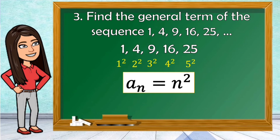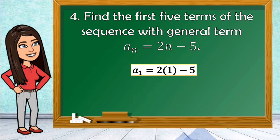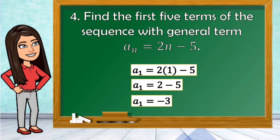Now we are done with analyzing the patterns. For number 4, find the first 5 terms of the sequence with general term a sub n is equal to 2n minus 5. We're going to reverse the process. Given the general term, we're going to find the first 5 terms. Substitute 1 to get the first term: a sub 1 is equal to 2 times 1 minus 5, which gives us 2 minus 5, and the answer is negative 3.